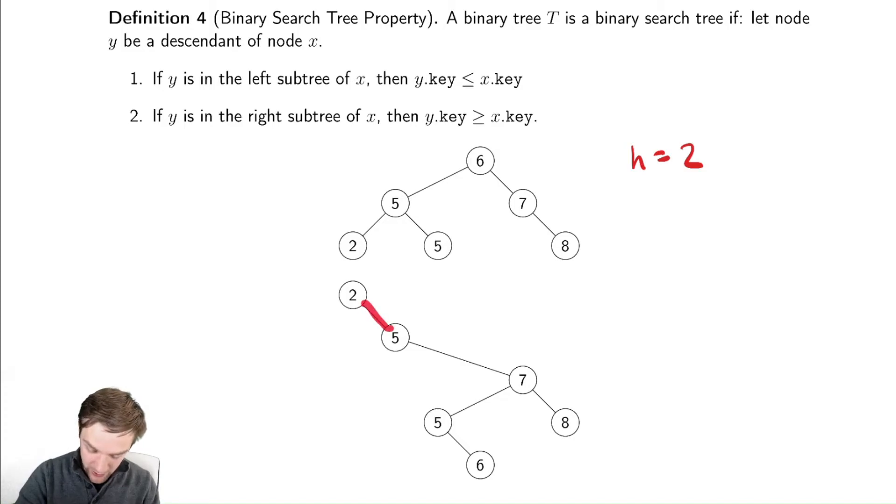However, in this last example, my height is one, two, three, four. So depending on how we construct our trees, we can have some radically different heights for our binary search trees.